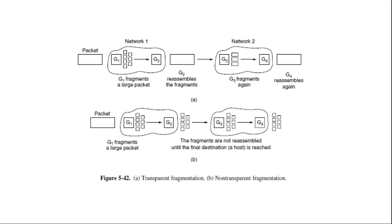The other fragmentation strategy is to refrain from recombining fragments at any intermediate routers. Once a packet has been fragmented, each fragment is treated as though it were an original packet. The router passes the fragments, as you can see in figure B, non-transparent fragmentation where reassembly is performed only at the destination host.